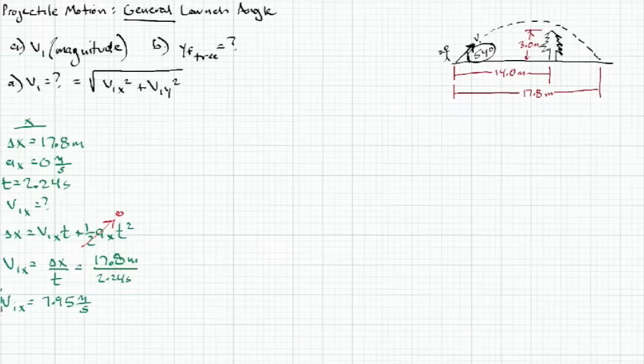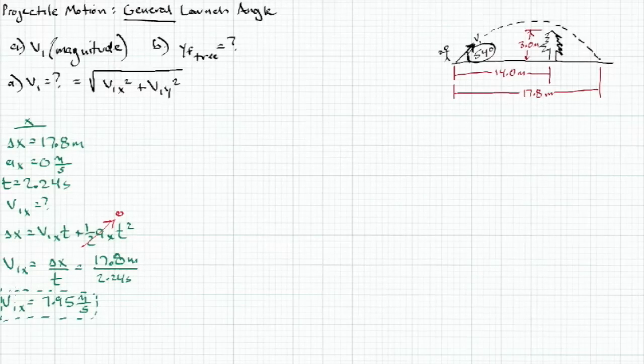We'll put a dotted box around that — 7.95 m/s is not our final answer, it's only the x-component. But we're partway there since we're solving for the magnitude of the initial velocity.